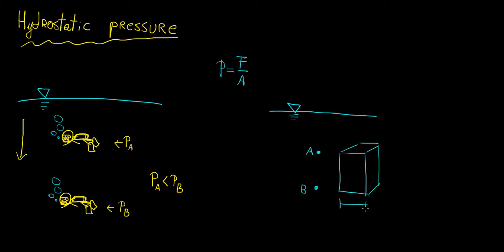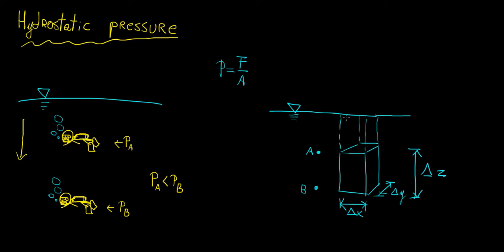We're going to have something that looks like a cube, and we're going to give it very small dimensions: delta x, delta y, and delta z. We're going to take a projection of this cube all the way to the top, so we have a column of fluid. We'll choose a convenient set of axes where z is in the downward direction, and we take our depth with reference to the surface of the water. Point B is going to be located at some distance z plus delta z — essentially the height of this arbitrary cube of fluid.